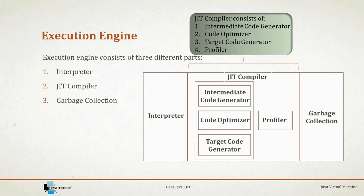The JIT compiler consists of four parts. The first is the intermediate code generator, which produces intermediate code. Second is the code optimizer, which optimizes the code generated by the code generator. Third is the target code generator, which generates machine code or native code. Last is the profiler, which sits outside the other three and keeps an eye on the code to find if a particular block can be assigned to JIT for faster execution.